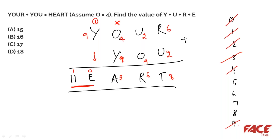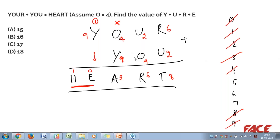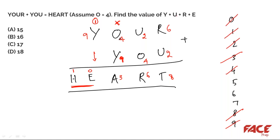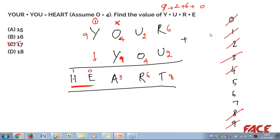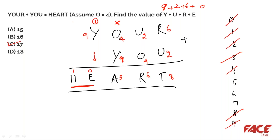Now we have all the values. Y + U + R + E = 9 + 2 + 6 + 0 = 17. That's the answer. So the two ways are: first, if you recognize this as a repeated question, just tick 17 immediately. Second, work through the cryptarithmetic logic as shown. Don't spend time re-solving a known question in an exam — it wastes time.